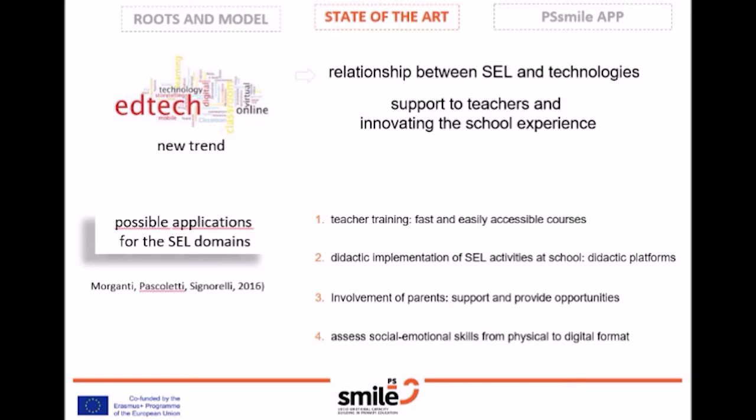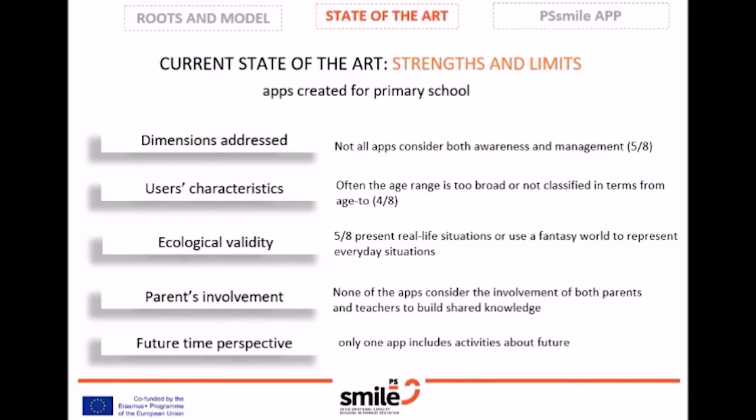We will go through some of the most well-known tools available to describe the current state of the art, highlighting strengths and limits that motivated the choices underlying PSMILE. Regarding apps for children: not all apps consider both awareness and management. Often the age range is too broad and not classified by age. Only two apps foresee a progression in the difficulty of activities. None of the apps identify or describe possible adaptations to make activities suitable for younger or older children.